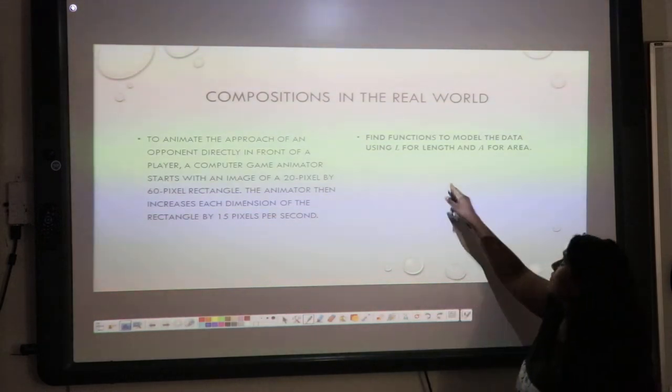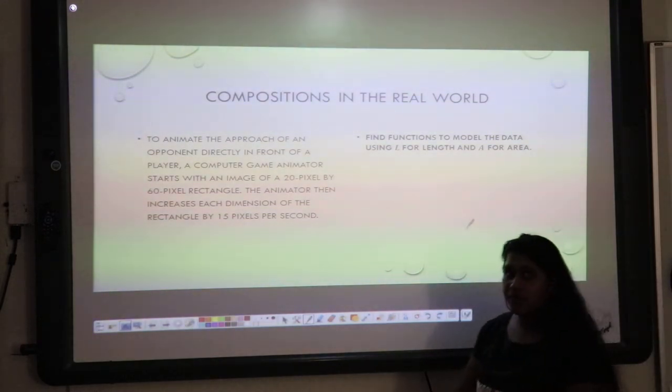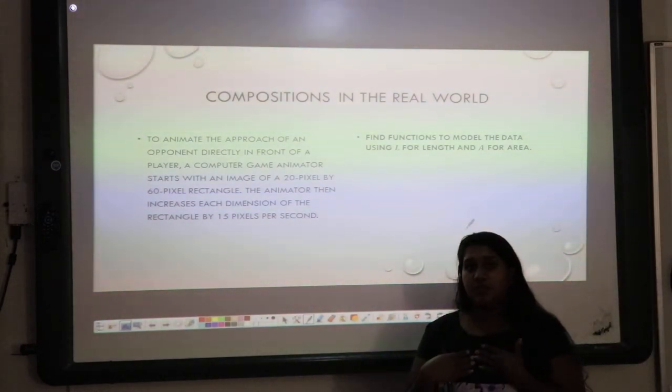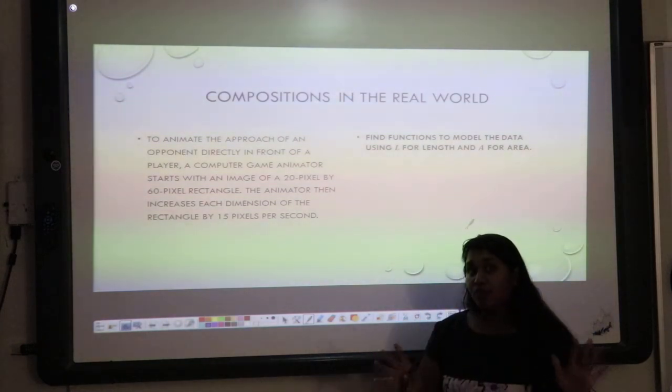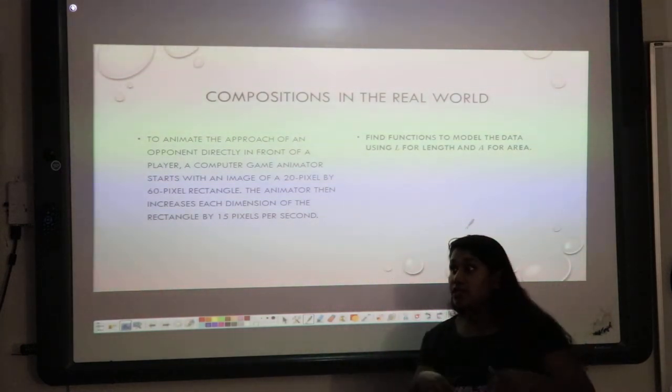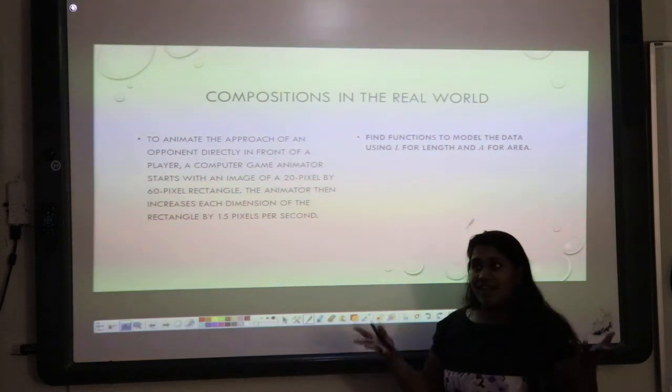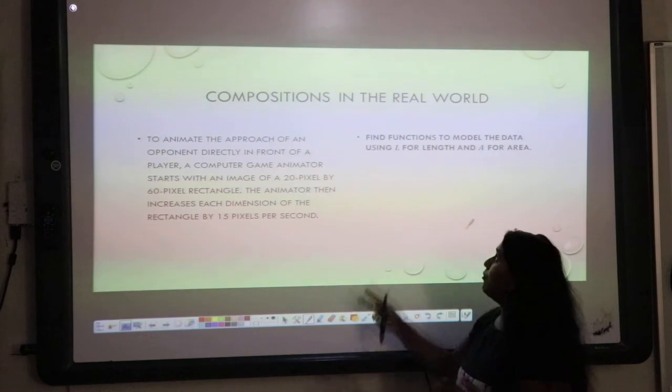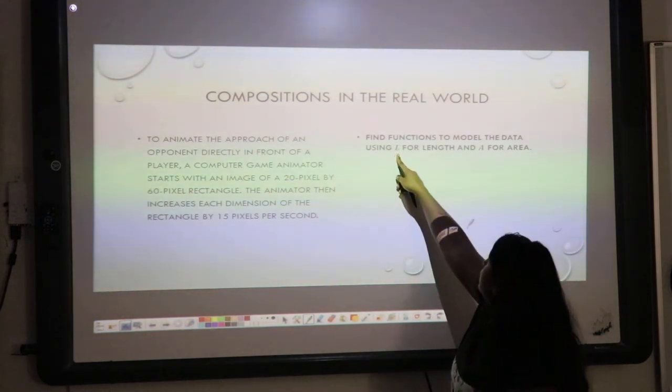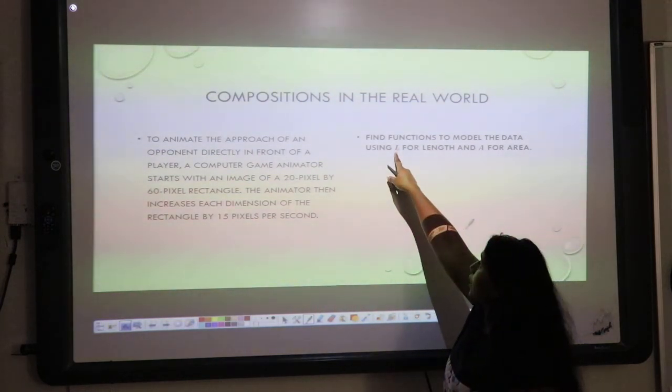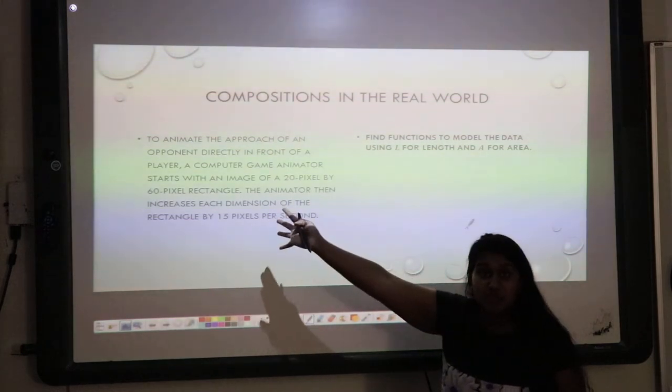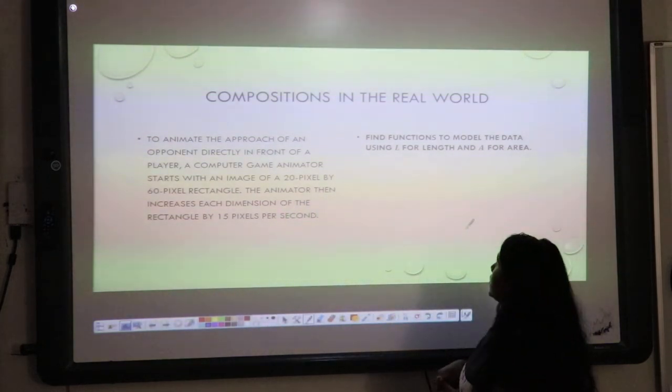We have three questions to kind of get through our real world application. The first one simply says, find the functions to model the data. I provided these variables for you. However, in a real question, on a real quiz or a test or in the real world, you create function model names. You use the letters that are appropriate to what's happening. So, we're going to figure out, model the data, so we need to know L for length, that's pretty simple, and A for area.